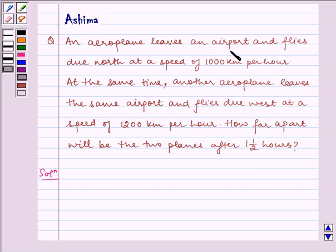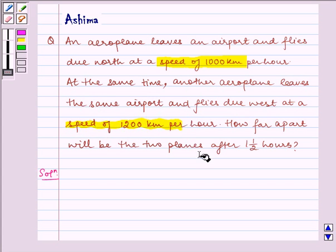An aeroplane leaves an airport and flies due north at a speed of 1000 km per hour. At the same time, another aeroplane leaves the same airport and flies due west at a speed of 1200 km per hour. How far will be the two planes after one and a half hours?